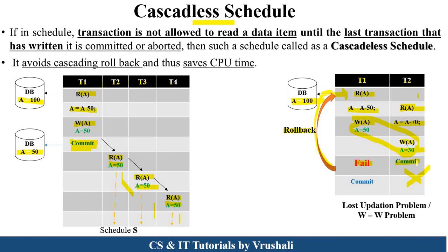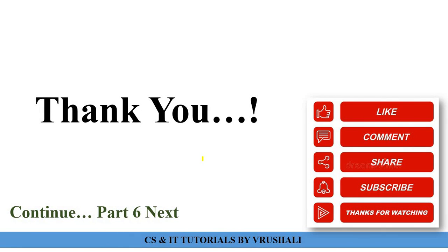This lost update problem is solved by the next type of schedule: strict schedule. To summarize: cascading schedule takes more CPU time because multiple transactions roll back simultaneously when a failure occurs. Cascadeless schedule saves CPU time because transactions work only after commit. Thank you. Keep learning.